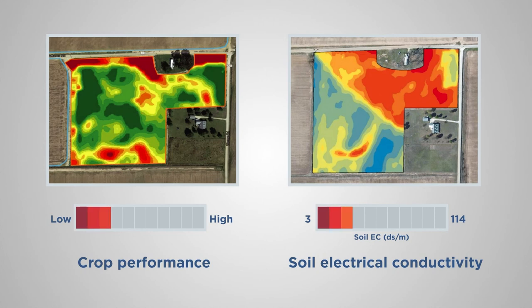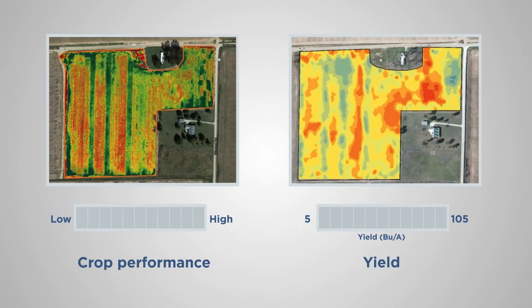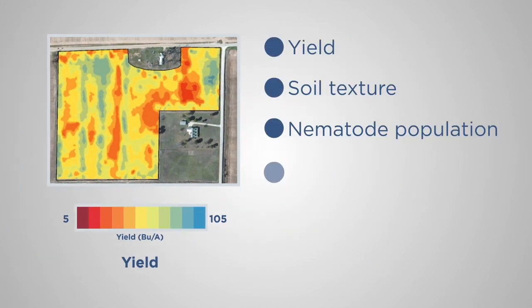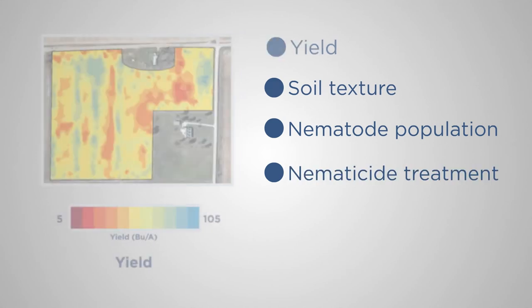Soil samples collected from each field helped determine the abundance of specific nematodes present. Yield maps were created to establish the relationship between yield, soil texture, nematode population, and nematicide treatment.